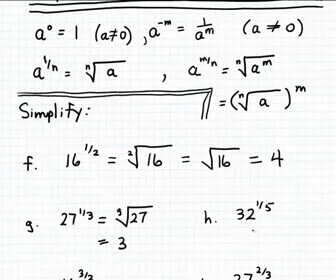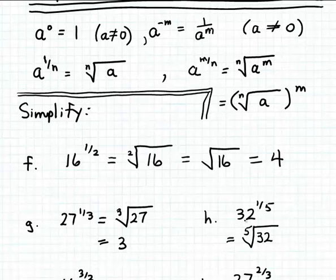One more example: suppose we want to raise 32 to the 1/5 power. All we have to do is rewrite that as a root. So 32 to the 1/5 power is just another way of expressing the fifth root of 32. We can simplify the fifth root of 32 because 32 is a perfect fifth power — 2 to the fifth power is 32 — so this simplifies to 2.